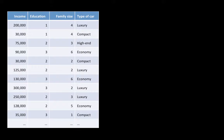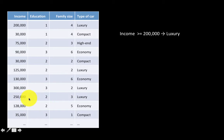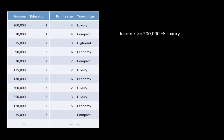In classification trees, the type of car is our target attribute, and what we're trying to do is identify in rule form what determines the target attribute. For example, by looking at this data, you'd realize that anybody with an income of $200,000 or more — there happen to be three such cases, at $200,000, $250,000, and $300,000 — all of them own luxury cars. So you might form a rule: if somebody's income is greater than or equal to $200,000, we can predict they will own a luxury car.